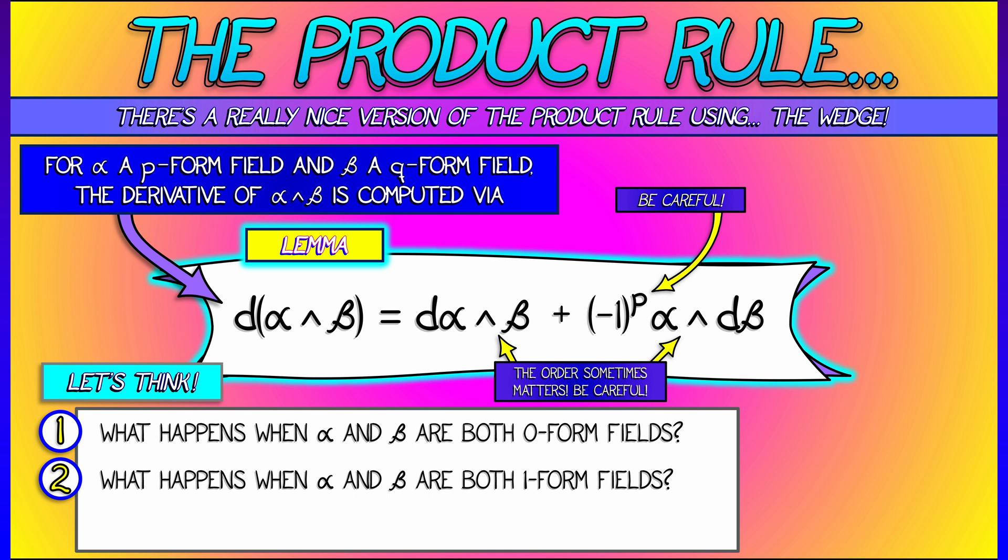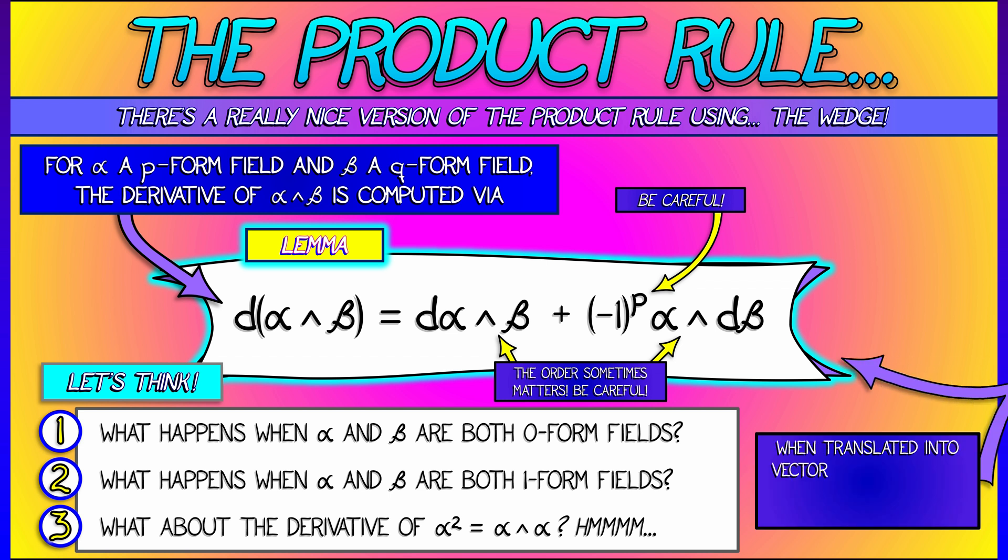Now, compare that with what happens when alpha and beta are both one-form fields. Now you really do have to worry about that negative sign. What happens when alpha and beta are the same thing? What's the derivative of alpha squared? That is, alpha wedge alpha. Do you get something that looks like 2 times alpha times d alpha? Hmm. I'm going to let you think about that. Maybe do a few examples.